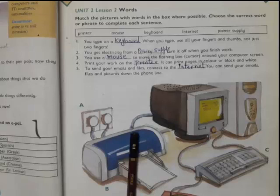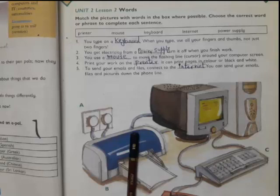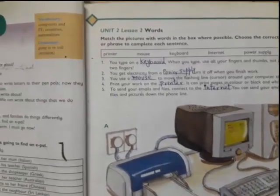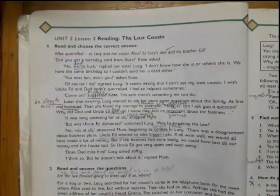Third one: you use a mouse to move the flashing line around your computer screen. Fourth one: print your work on the printer. It can print pages in color or black and white. Fifth one: to send your emails and files, connect to the internet. You can send your emails, files and pictures down the phone line. So it's done. Move to next page.